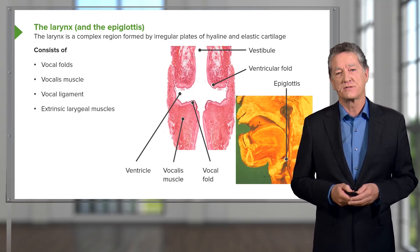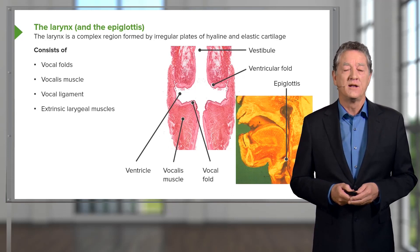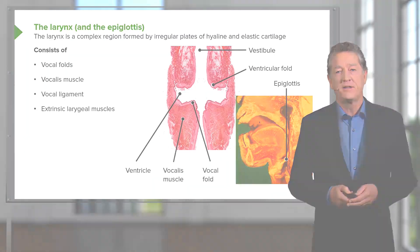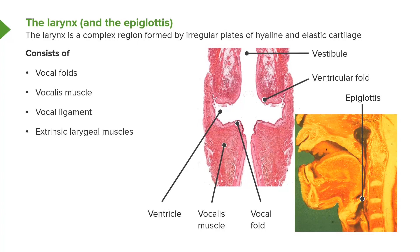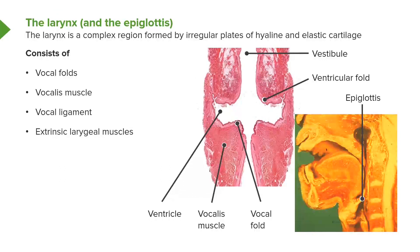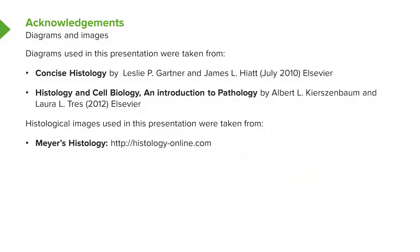Changing the proportions of the glottis and the tension on the vocal cord is responsible for the pitch of our voices. Phonation is also carried out by the effects of sound going through the vestibule and the ventricle, and also in the upper parts of our respiratory system — that gives our individual sound of our vowels and consonants. The extrinsic muscles of the larynx have no role in sound production; they are the muscles used to actually lift the larynx as part of the swallowing process.